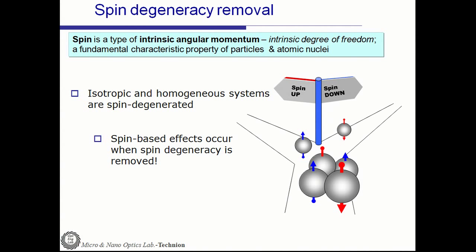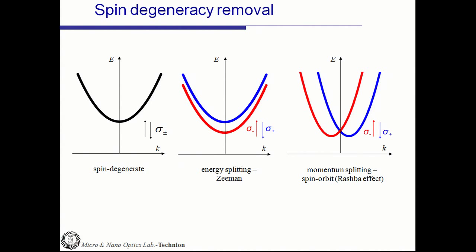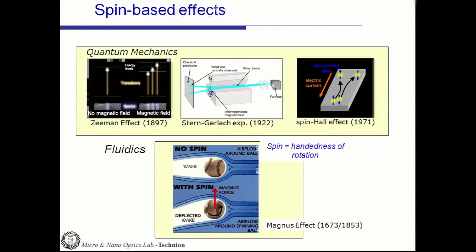It is possible to remove the spin degeneracy in the energy domain — the Zeeman effect — or in the momentum domain, which is the Rashba effect. There are many spin-based effects in physics, like the Zeeman effect, and in solid state the spin Hall effect, and the Magnus effect in fluidics.